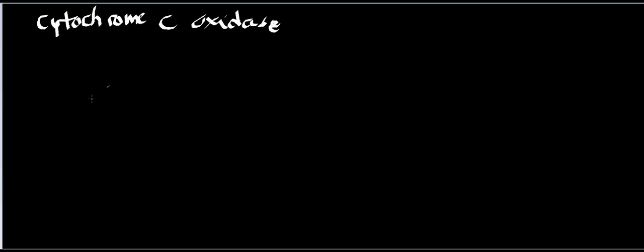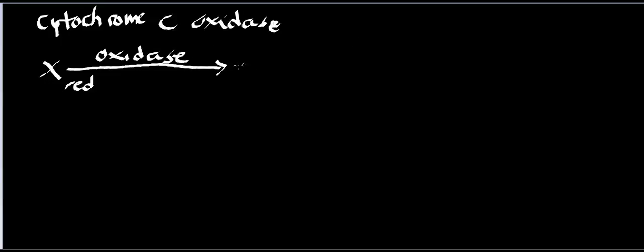Let's define what an oxidase is. If I have some molecule X that starts out reduced, and my enzyme is an oxidase, you're going to end up with X that's oxidized. An oxidase is an enzyme that uses molecular oxygen and performs an oxidation, but none of the oxygen atoms get incorporated into the molecule — they instead get lost as two waters.